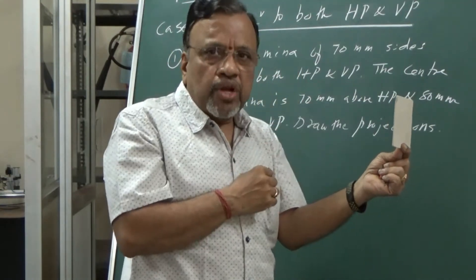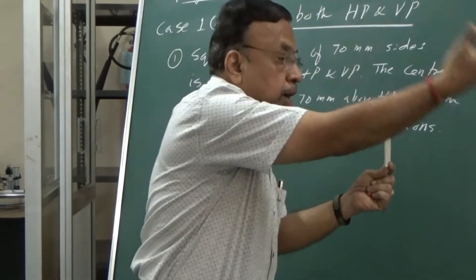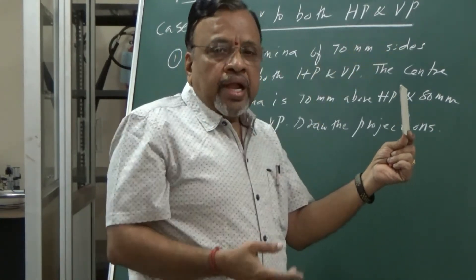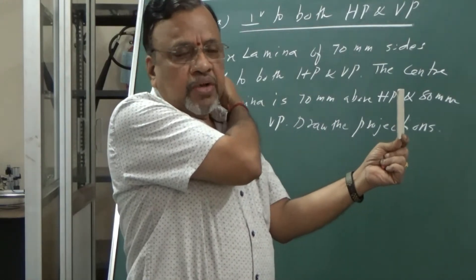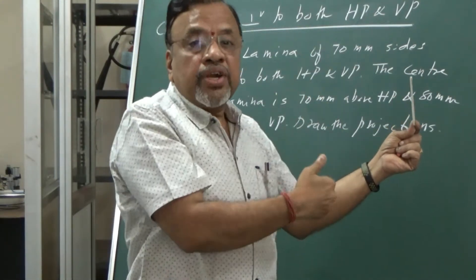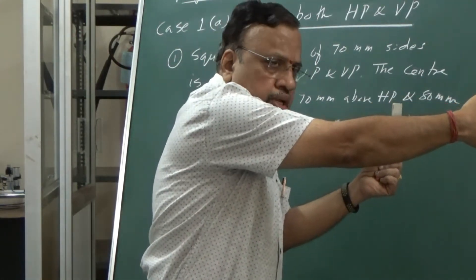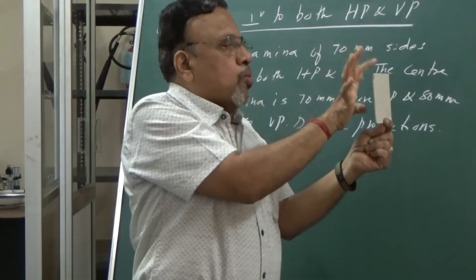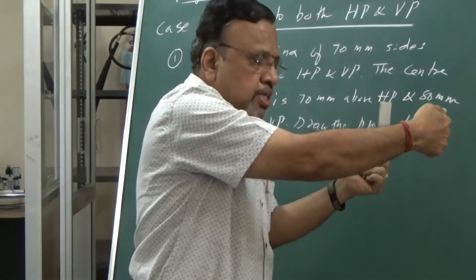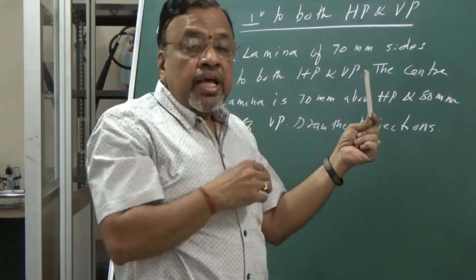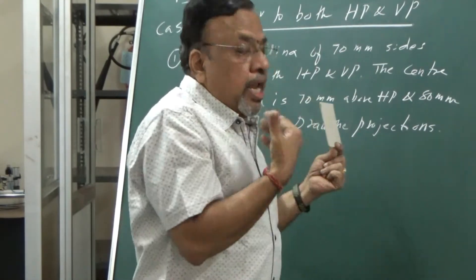Since I have already given you the concept of profile view, remember — especially in first angle projection problems — wherever I want to draw the view on my right side, that means I am projecting onto the right profile plane, but that particular view is your left side view. Similarly, if I want to project onto LPP, that means I draw the side view on the left side of your top and front view, and then the view has to be viewed from that side. In first angle projection, the object should always be between the observer and the plane. So either you can draw the left side view or right side view.